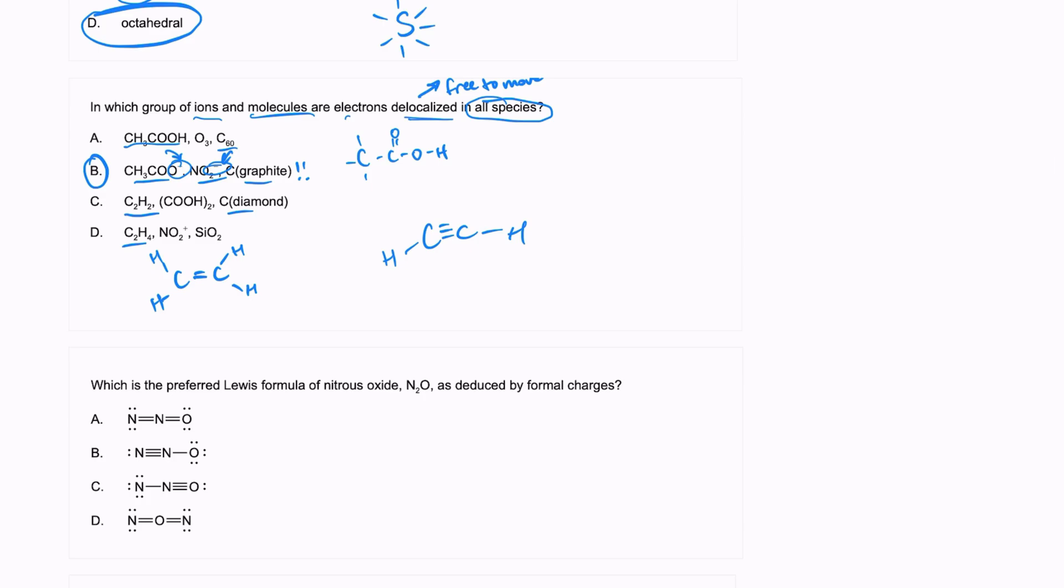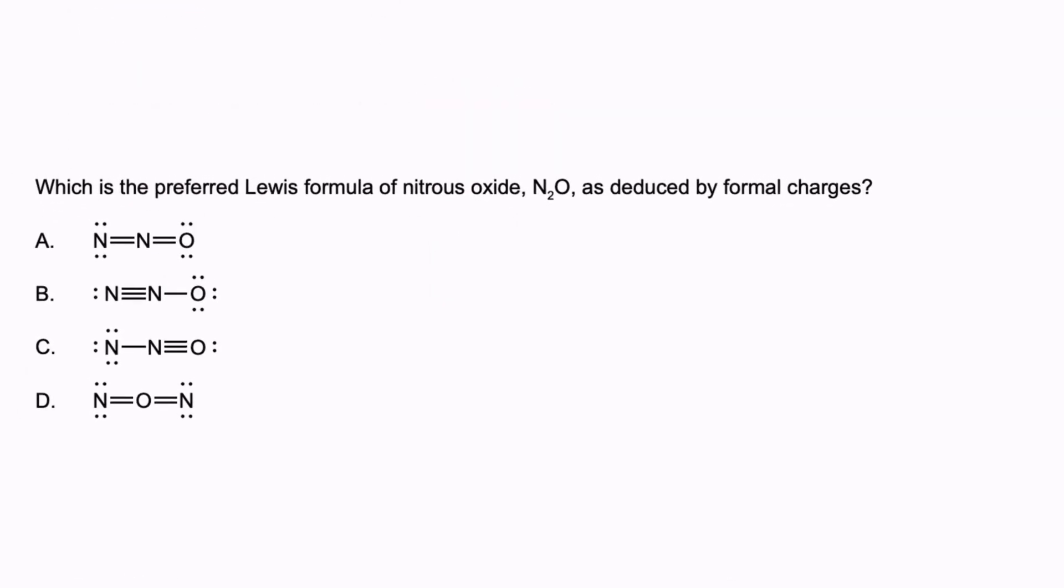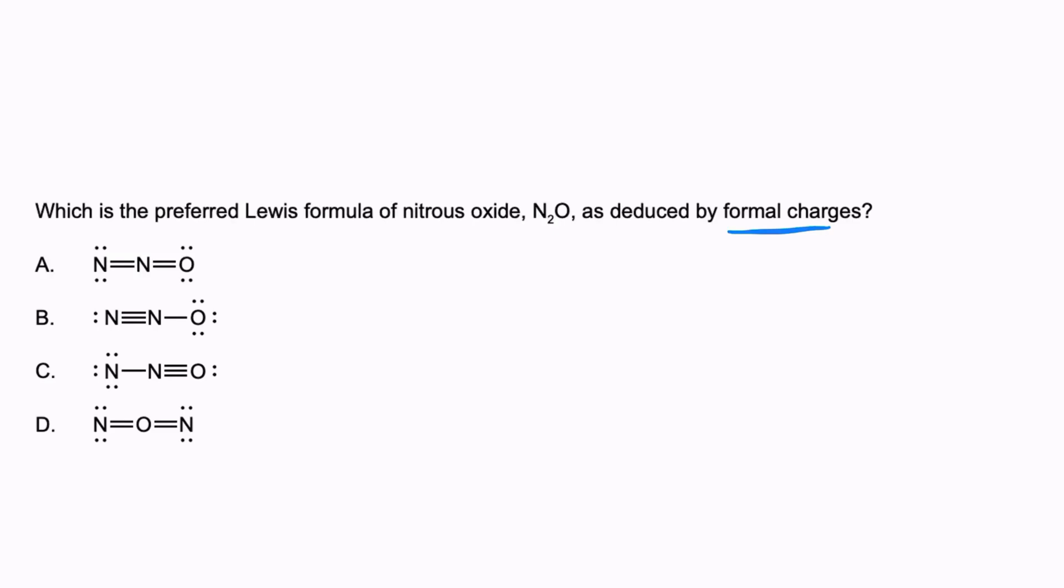Let's look at the next question. It says, which is the preferred Lewis formula of nitrous oxide N2O as deduced by formal charges? We're looking at N2O, we do need to look at the formal charges. The reason there's so many options of Lewis formulas is because there is going to be a coordinate bond, which is where one of the atoms is going to share both of the electrons in the bond.